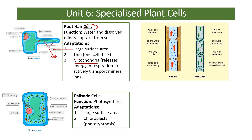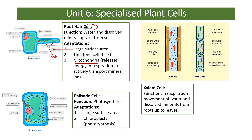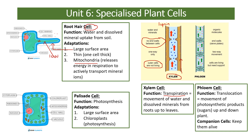Xylem cells are used for transpiration — the movement of water and dissolved minerals up the plant. The xylem cells join together to make xylem tissue, essentially forming a hollow tube for water to travel up. To make this hollow tube, the cells have actually died — mature xylem cells have no end walls. They are also covered in lignin, a waterproof layer similar to wood, which makes the cells strong.